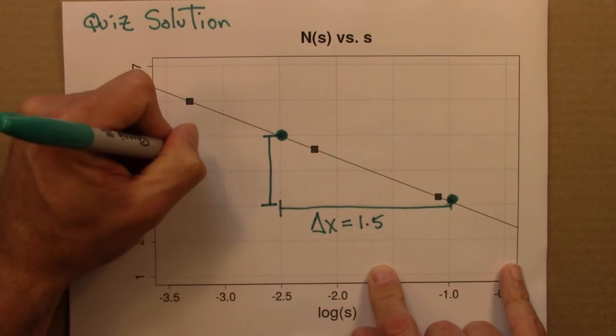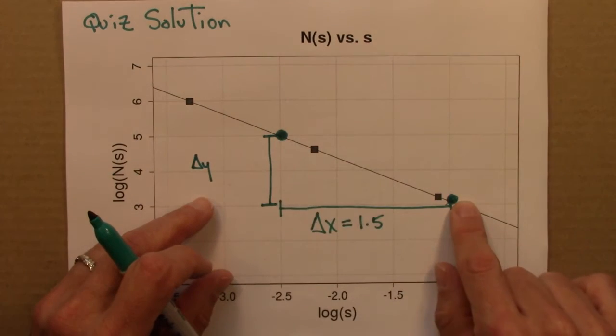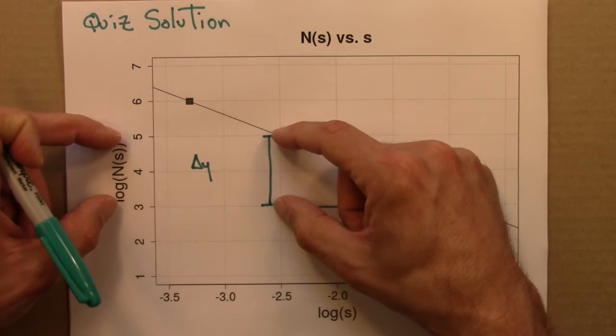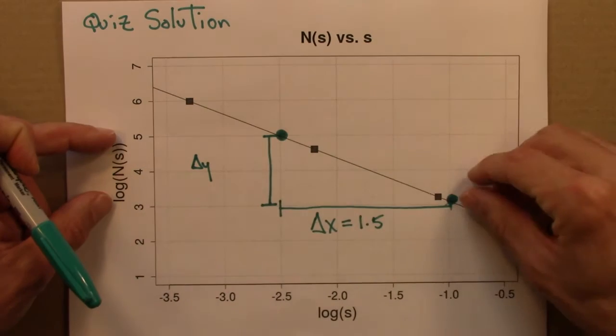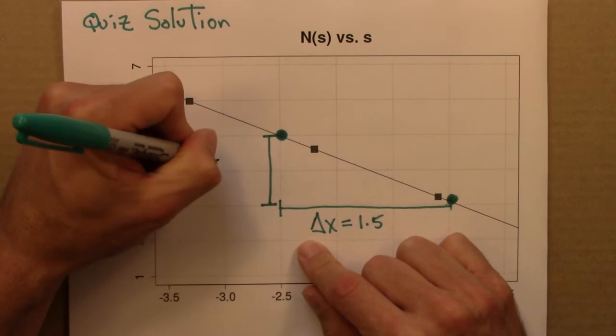What about delta y? What is the altitude change? How much does y change from this point to this point? Well, it's almost 2, but it's a little bit less. So I'm going to call that 1.9.